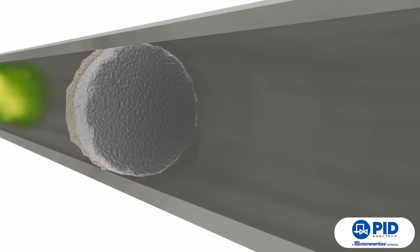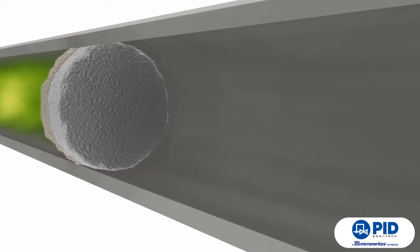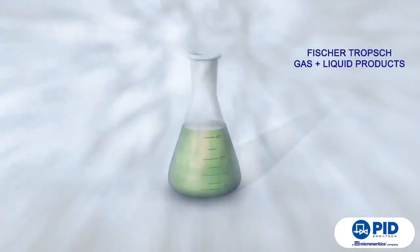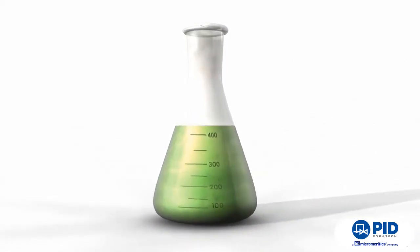However, there are many reactions like the Fischer-Tropsch synthesis, in which both gas and liquid products are obtained. In these cases, liquids are separated from gases in a condenser downstream the reactor.